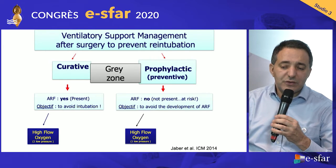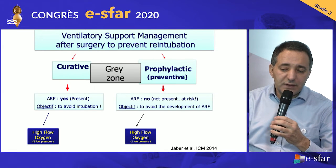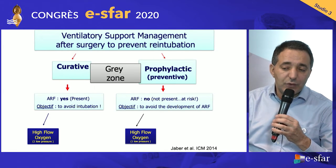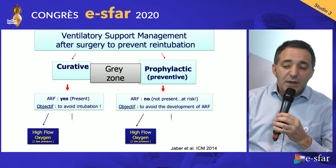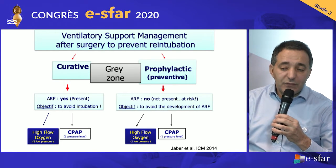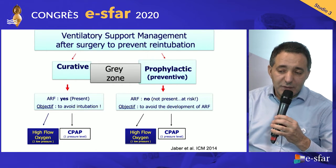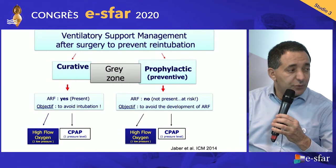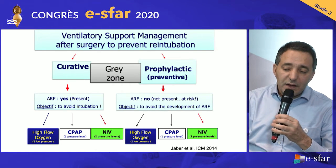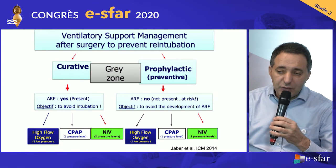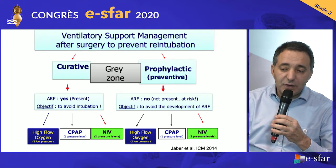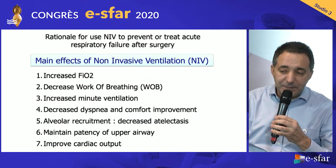In each situation, there are three main strategies. It's high flow oxygen therapy — oxygen with high flow. Then you have CPAP with one pressure level, meaning continuous positive airway pressure. And non-invasive ventilation with two pressure levels. Audrey will develop this aspect.